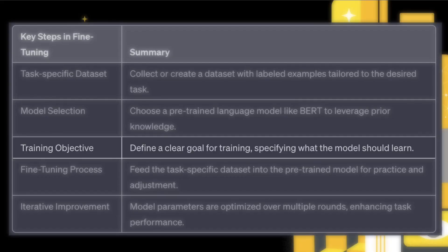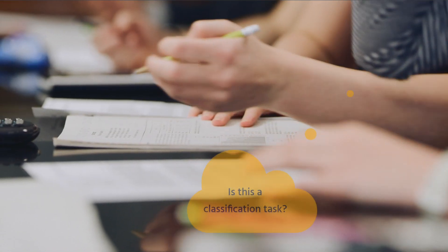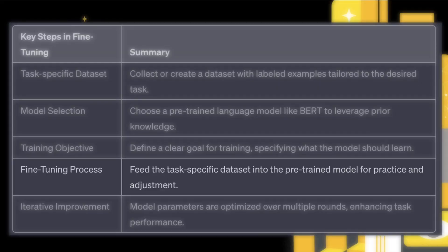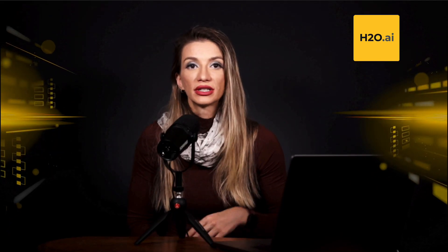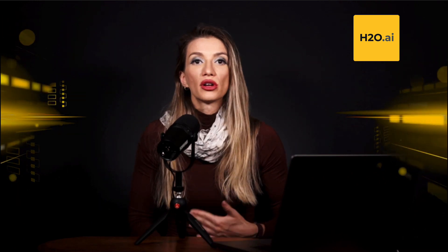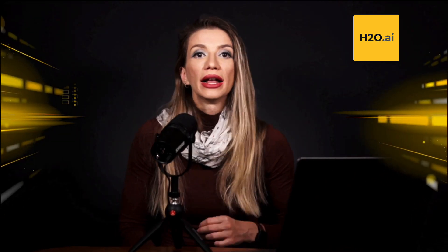We select a pre-trained language model like BERT and start with the knowledge it already learned during pre-training — it's like having a head start for the new task. We set a training goal, telling the model what it should try to learn. For example, if it's a classification task, the model learns to minimize errors and classify sentences correctly. In the fine-tuning process, we feed the task-specific dataset into the pre-trained model and let it practice the new task. The model's parameters get adjusted through optimization, and it gets better and better at the task after several rounds of practice.